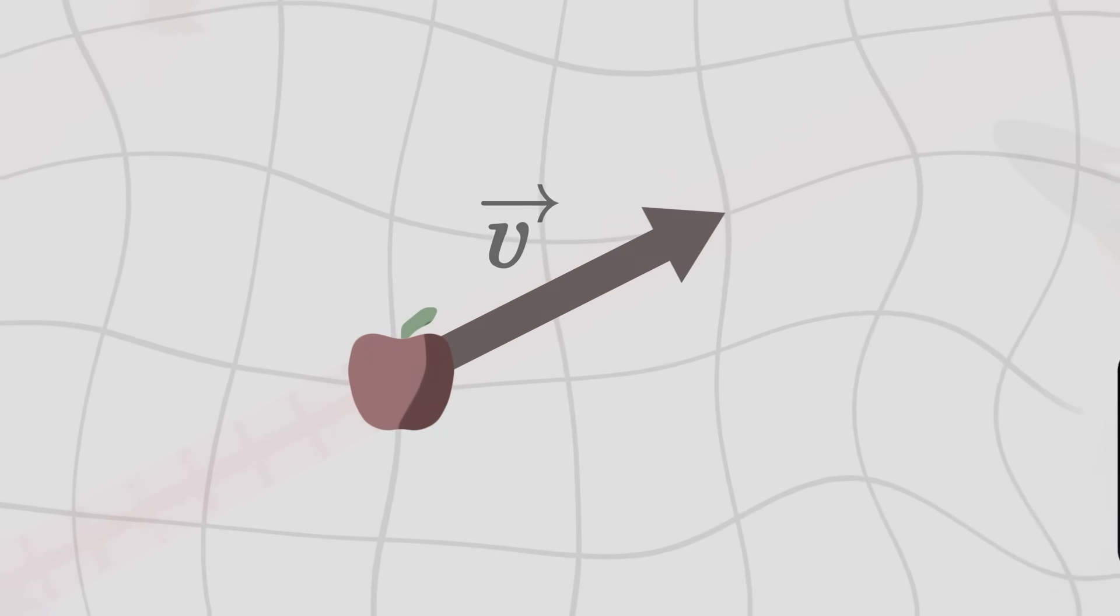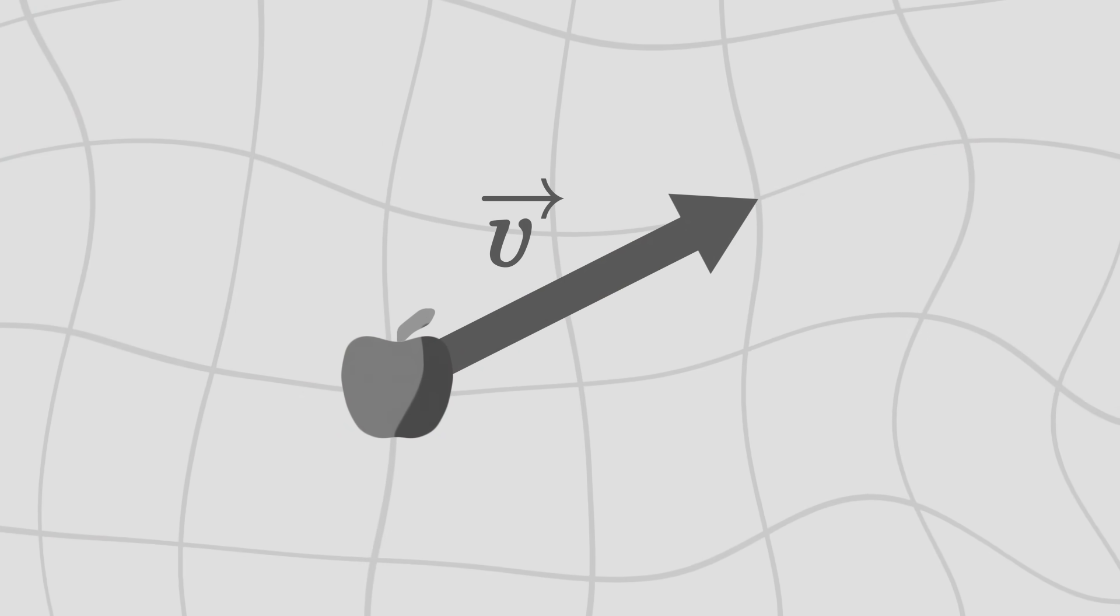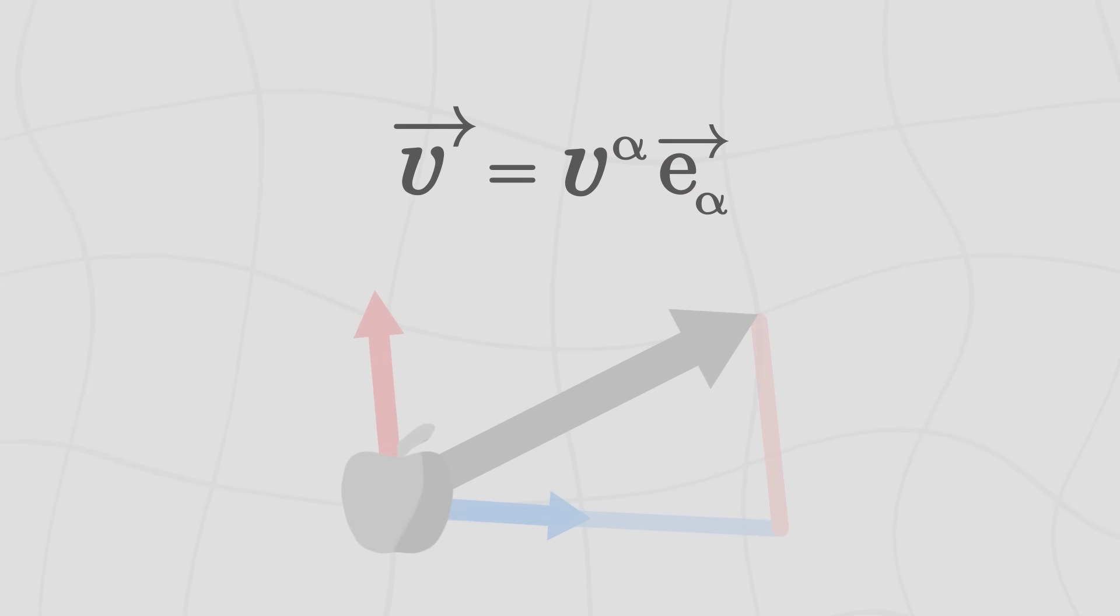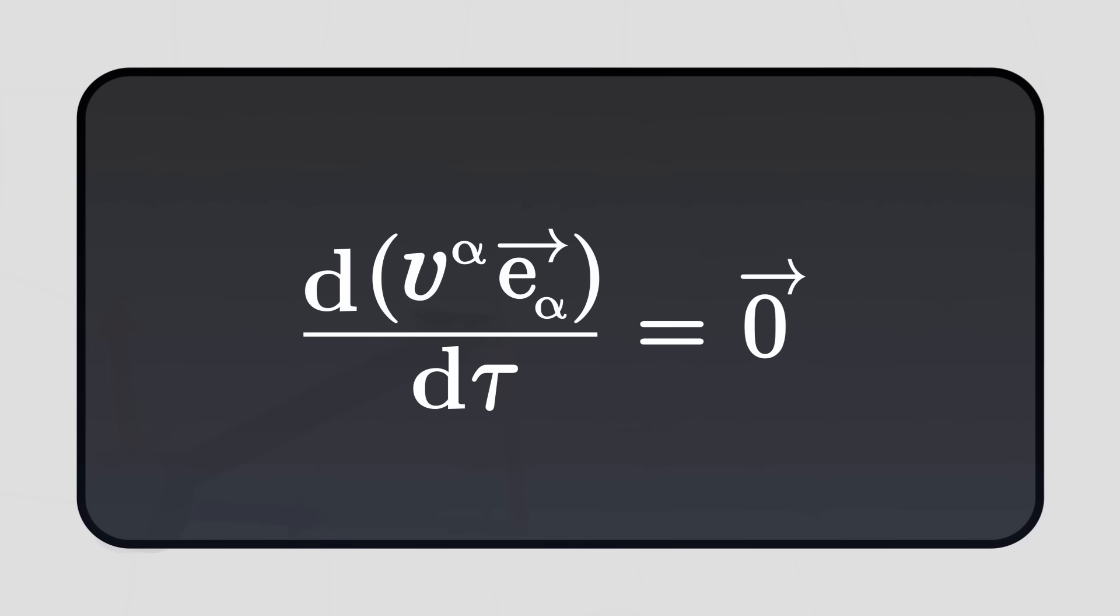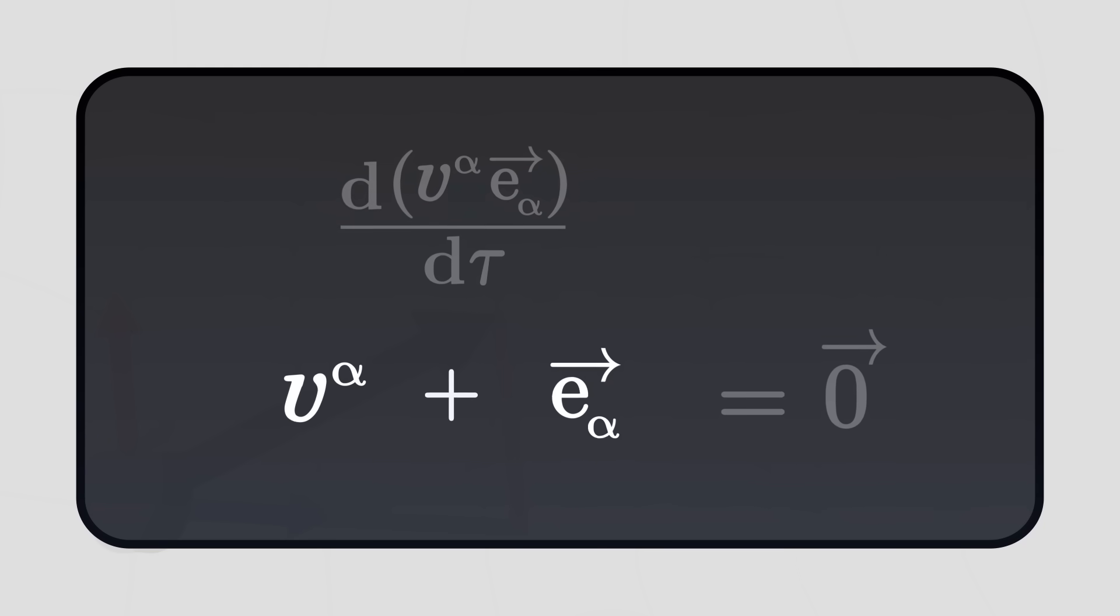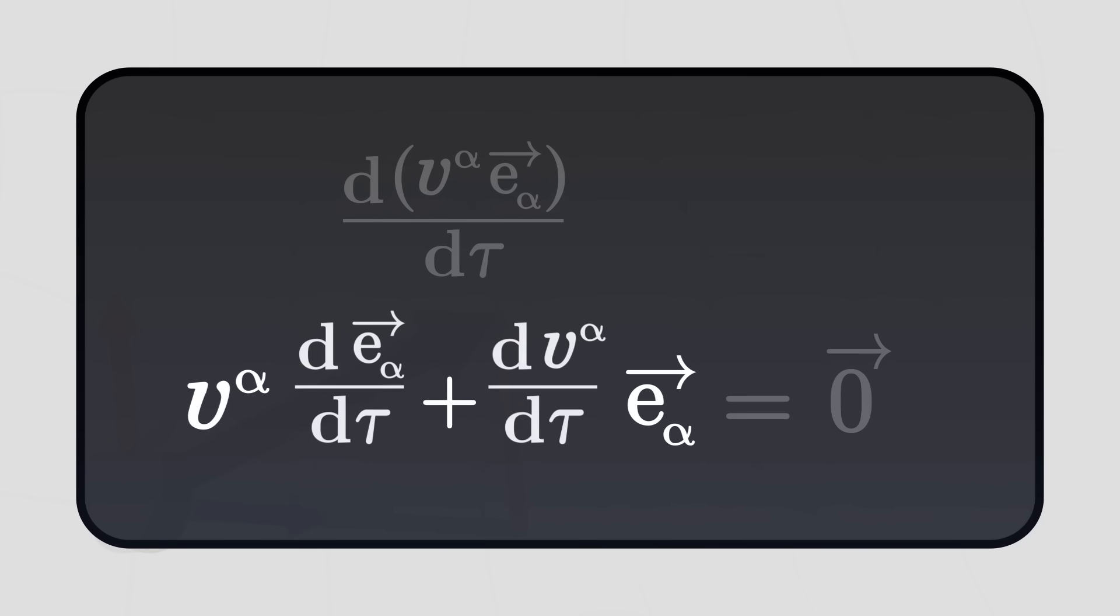But we saw previously that the velocity vector can be written as the sum of its components multiplied by the basis vectors. Using this expression, and knowing that the derivative of a product is the sum of each term multiplied by the derivative of the other term,